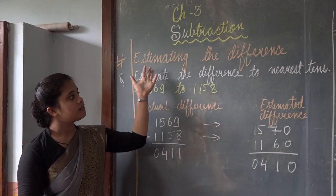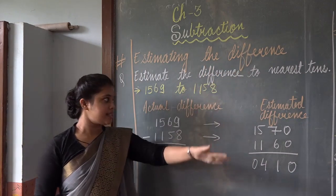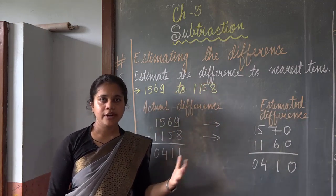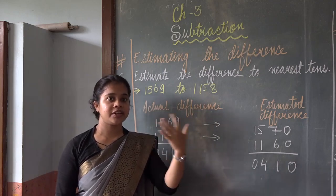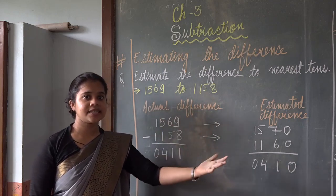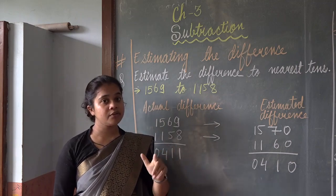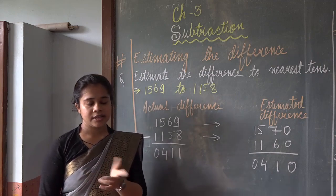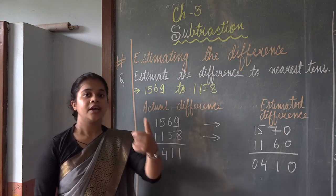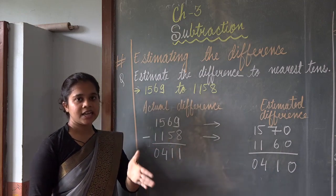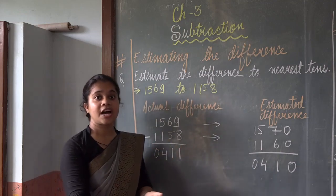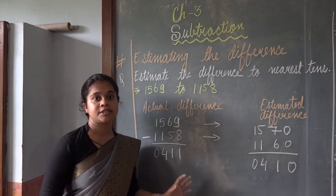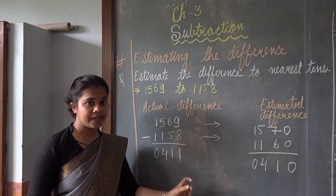Here we have the topic estimating the difference. We have already explained in previous videos about estimating a number to nearest tens, hundreds, thousands. For example, if you have the number 788 and you have to estimate to nearest hundreds, it will be 800. And suppose the number is 50 and you have to estimate to nearest tens, it will be 20.